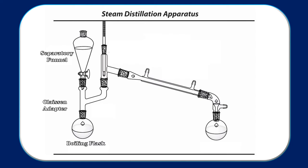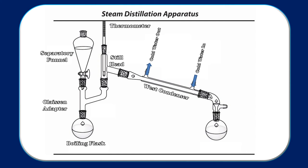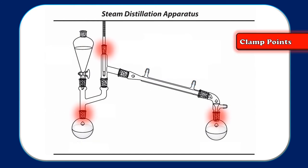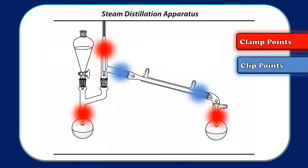Remember that with immiscible liquids, we can add as much of one as we'd like to the other, and the other will continue to maintain its same vapor pressure regardless of how much we have diluted it. From the other side of the Claisen adapter onward, we have a simple still including a still head, a thermometer to monitor temperature, a West condenser with cold water plumbed in the bottom and out the top, a vacuum adapter, and a receiving flask to collect our oil and water mixture. There will also be three clamp points and two clip points to keep our apparatus together and stable inside the fume hood.